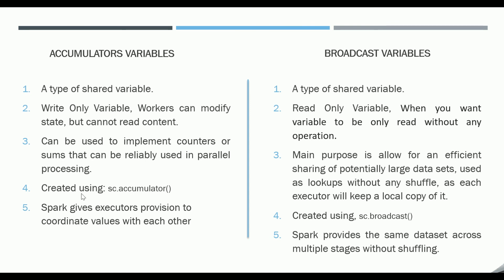To summarize: Spark gives the executors the provision to coordinate values with each other with the help of accumulator variables, whereas Spark provides the same data set across multiple stages without shuffling with the help of broadcast variables. Hope you have got an idea of the different kinds of shared variables — accumulators and broadcast variables — and the main differences between the two. This shared variable concept is mainly asked in most interviews. In the next video we will try to understand other important concepts in Spark. Thanks for watching, have a nice day.